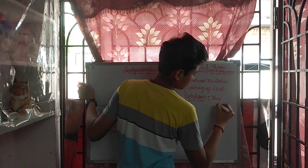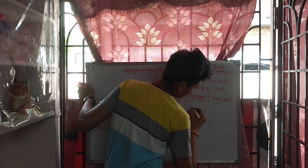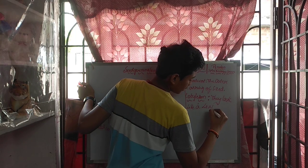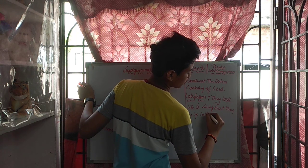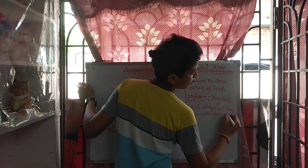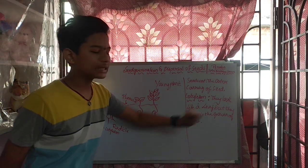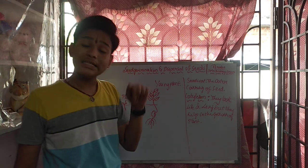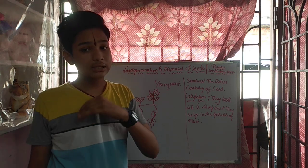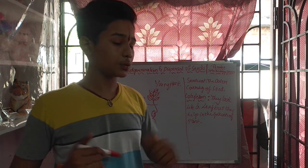Next is the cotyledon. Cotyledons look like a leaf but they help in the growth of the plant. The cotyledon is of two types based on the seed: if a seed has one cotyledon it is known as monocot, and if the seed has two cotyledons it is known as dicot.